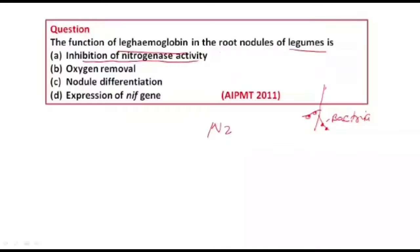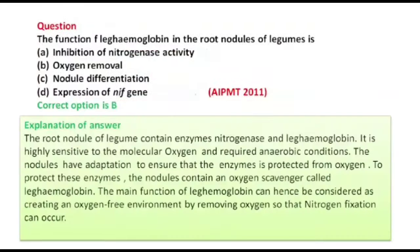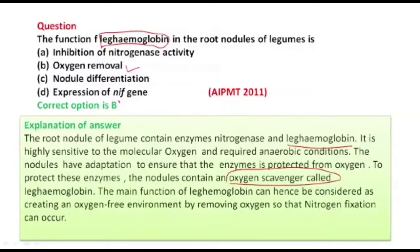The options are: inhibition of nitrogen activity, oxygen removal, nodule differentiation, and expression of nif gene. The actual function of leghemoglobin is that it reacts with oxygen and takes it inside — it sequesters oxygen — creating an oxygen-free environment. This is because nitrogenase enzyme does not work in the presence of oxygen; it cannot fix nitrogen if oxygen is present.